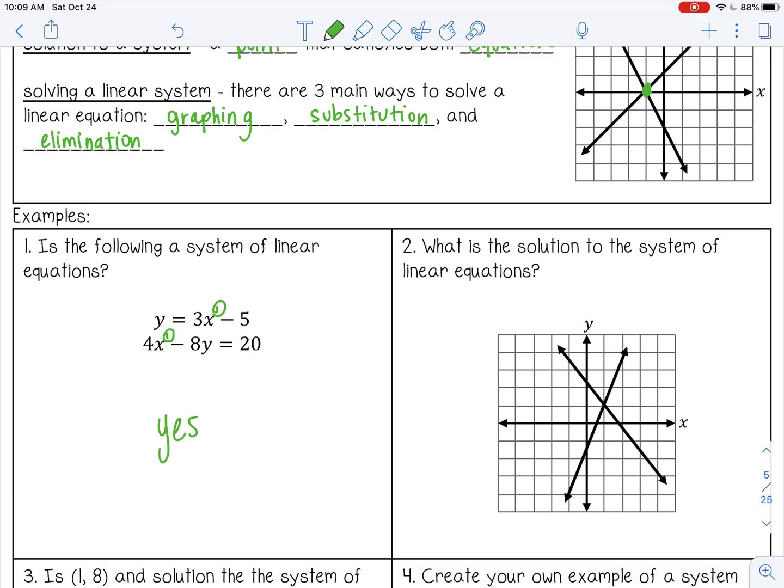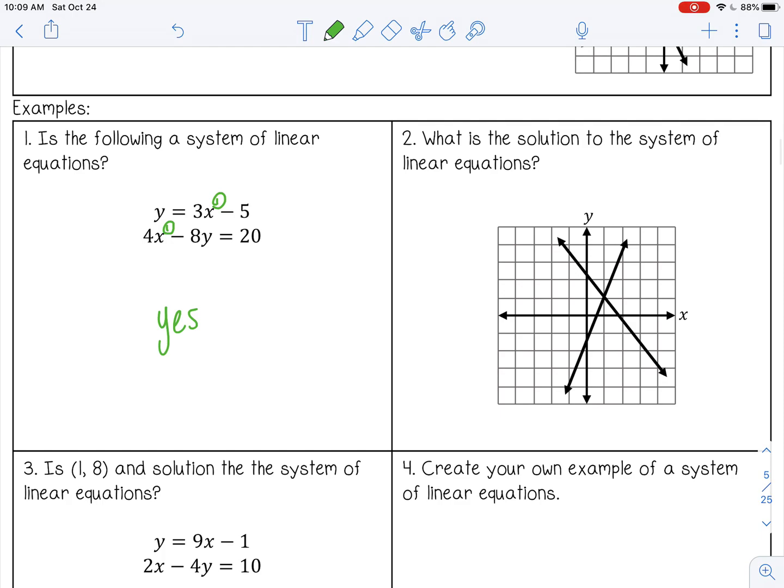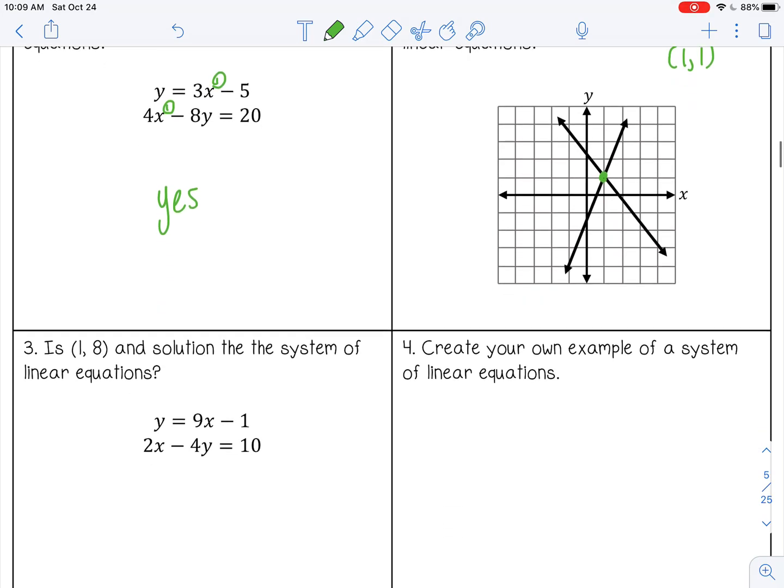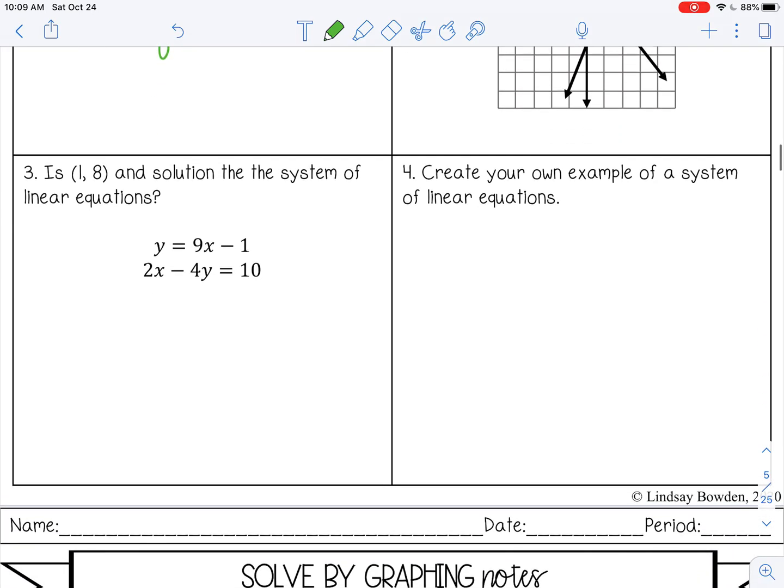Graphically, it's where the two lines meet, which would be here at one, one. Number three: is one, eight a solution to the system of linear equations? To determine if an ordered pair is a solution, you're going to substitute that ordered pair into both equations and see if it makes them both true.